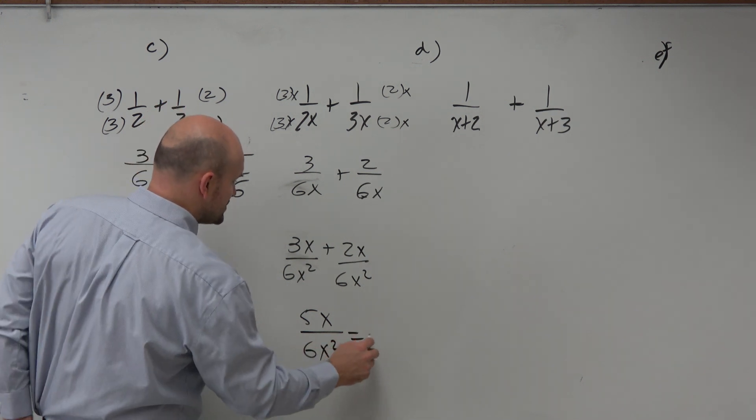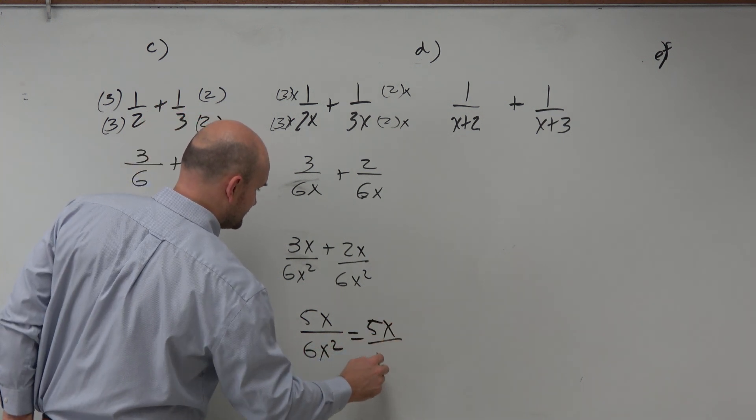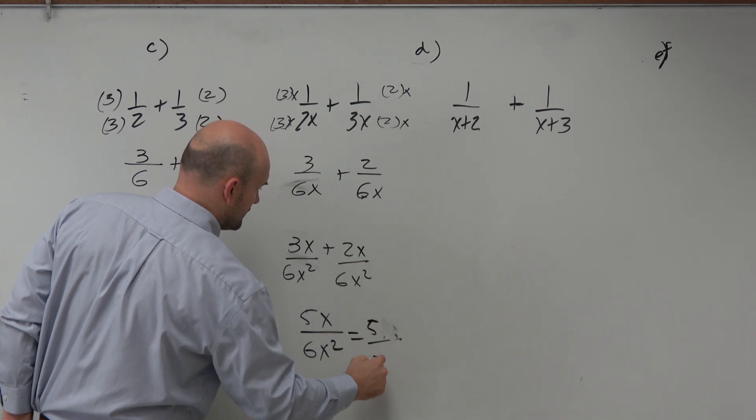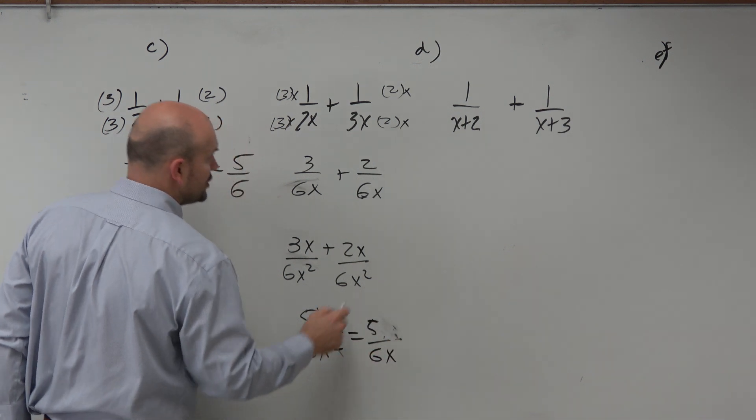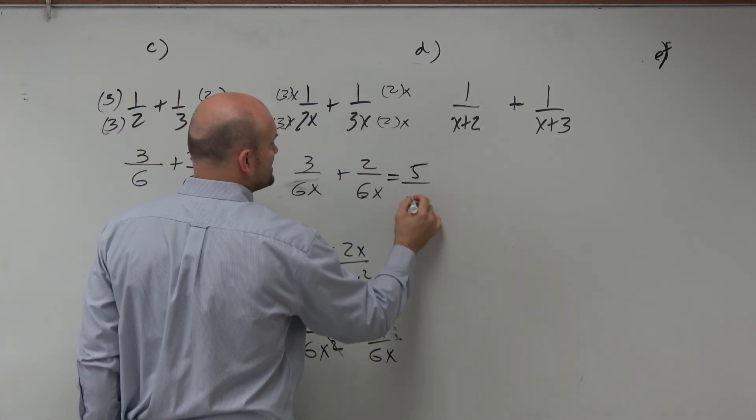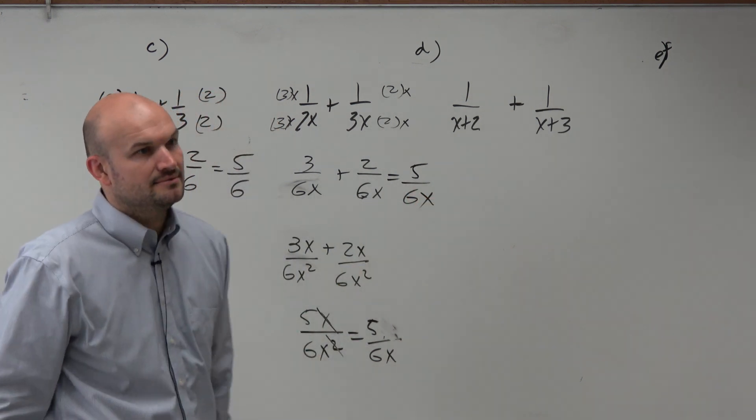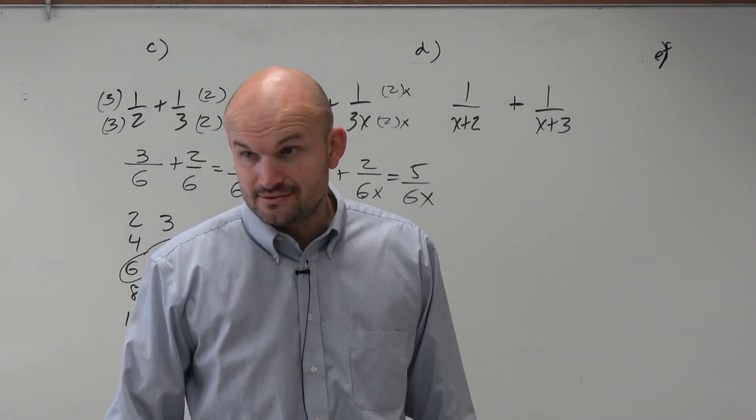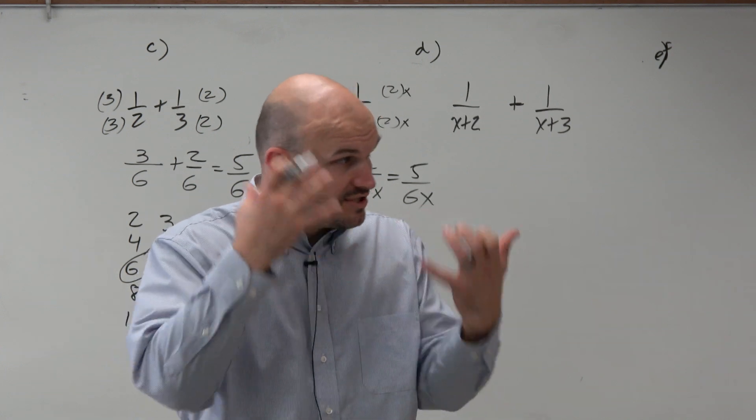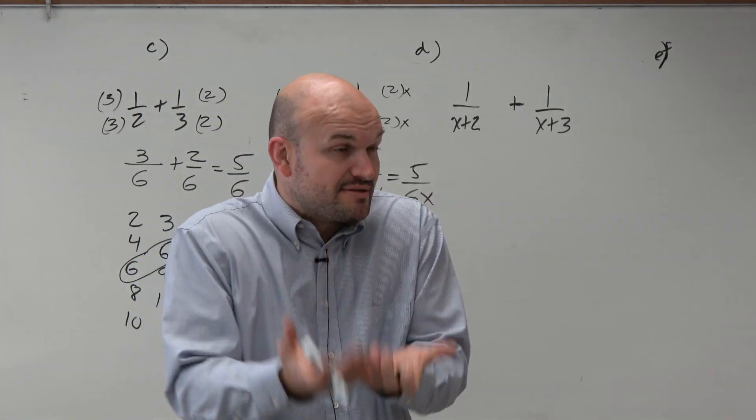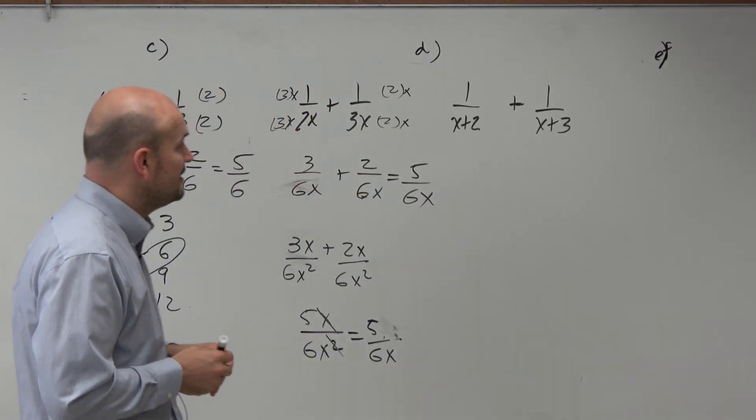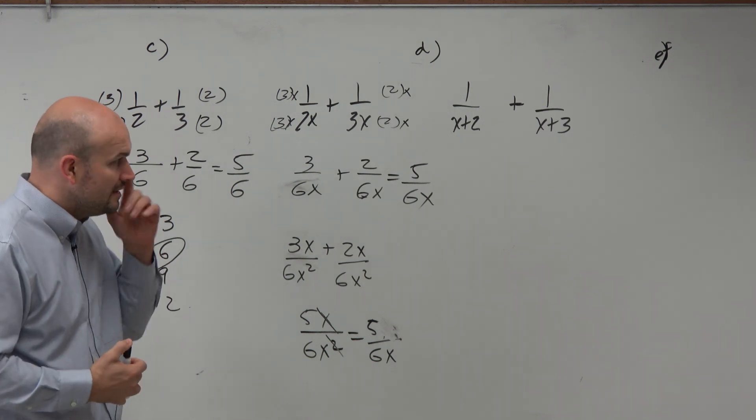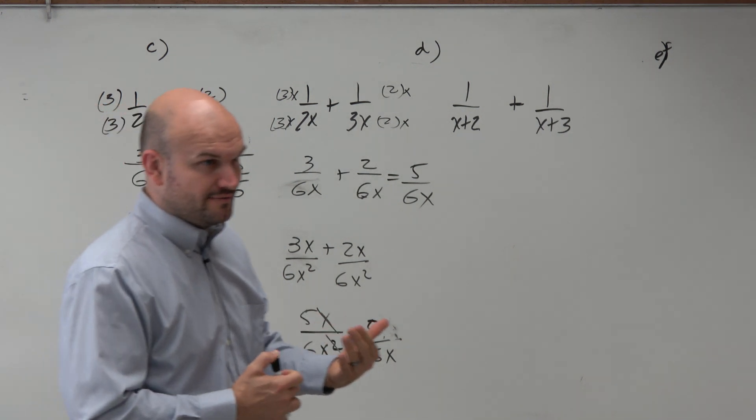So if you don't choose the smallest multiple, then all you're going to have to do is simplify at the end. Which isn't the end of the world, is it? Right, so don't overthink things. Obviously, we want to use the most simplified answer. But again, guys, if you're having trouble, then just roll with it if you find a denominator.